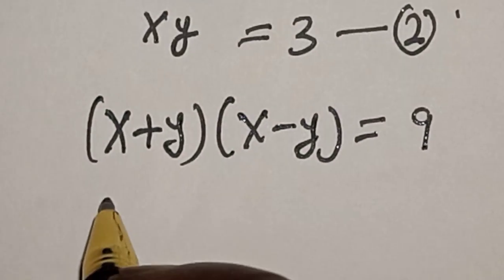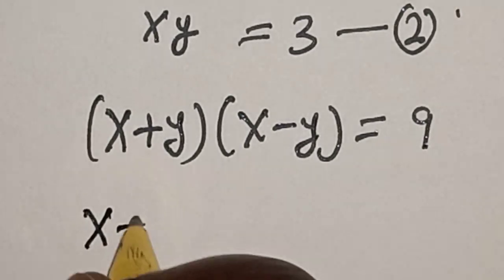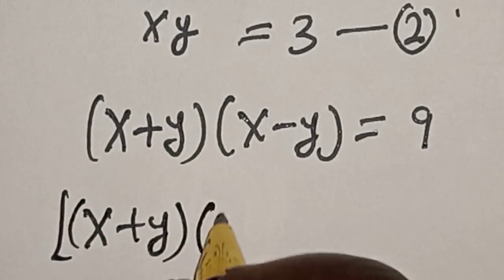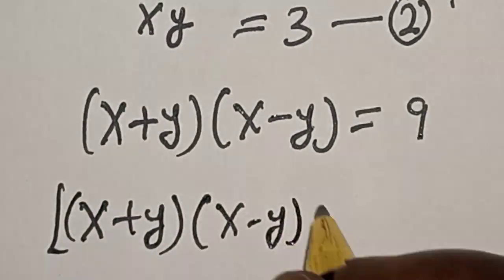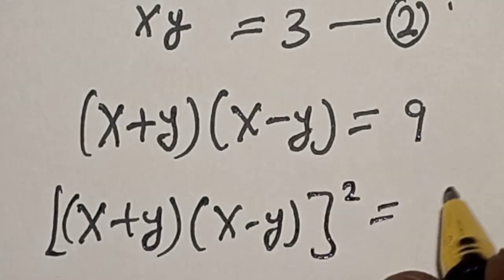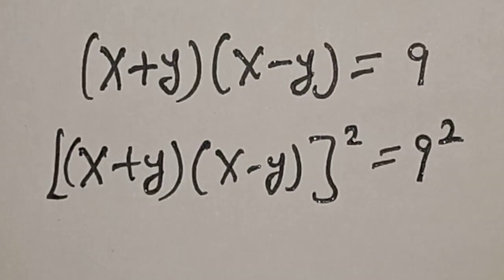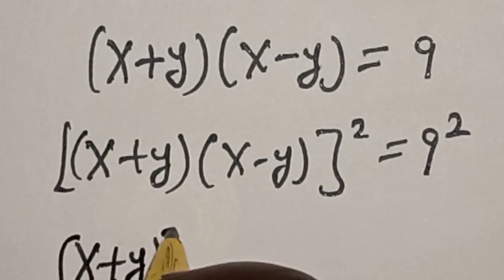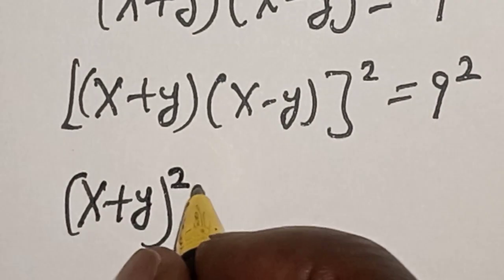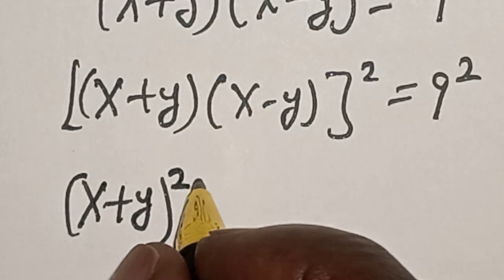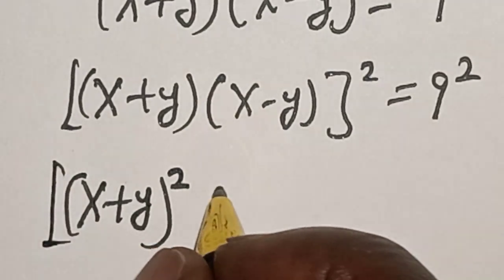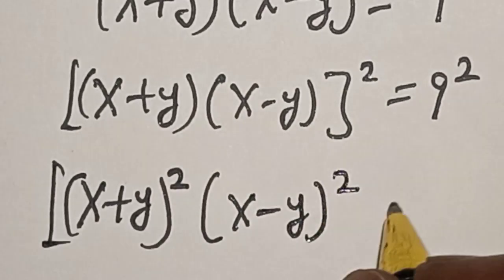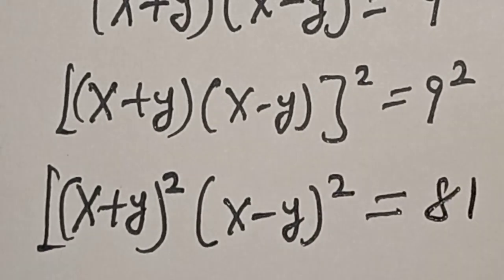Then let's square both sides. We have x plus y multiplied by x minus y, all squared, is equal to 9 squared. This is the same as x plus y squared multiplied by x minus y squared is equal to 81.